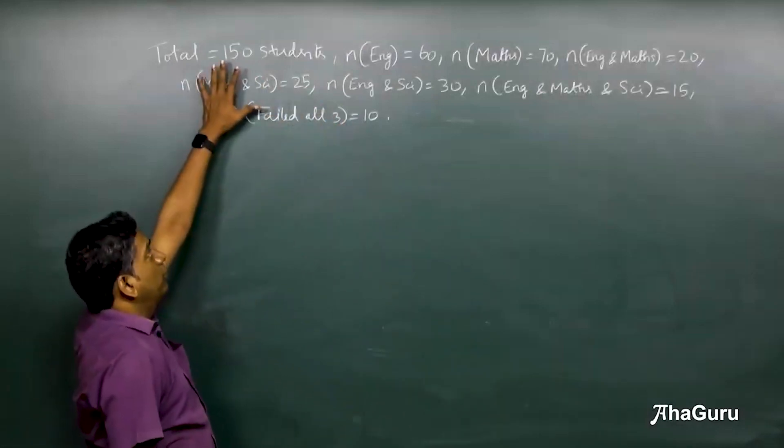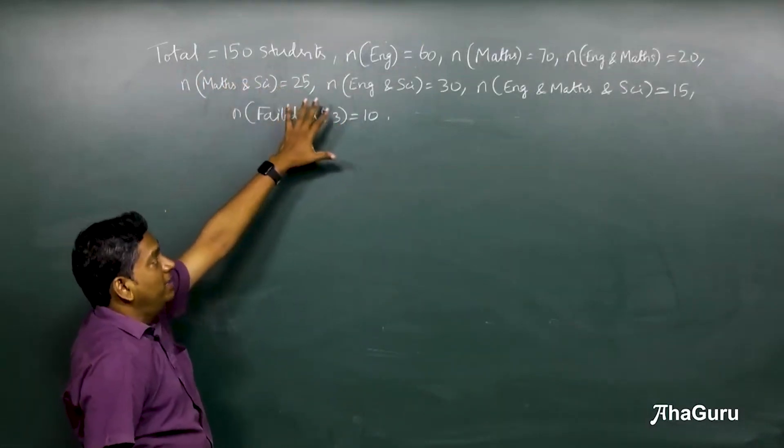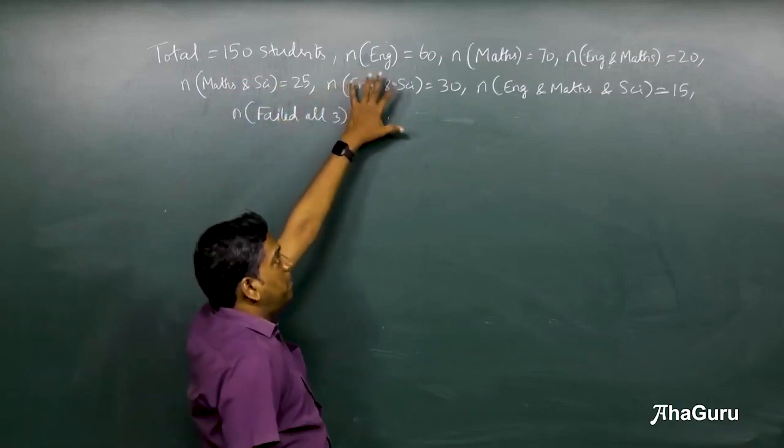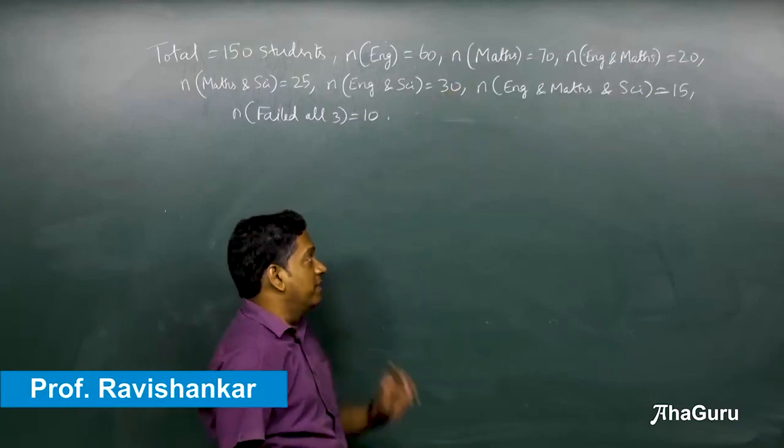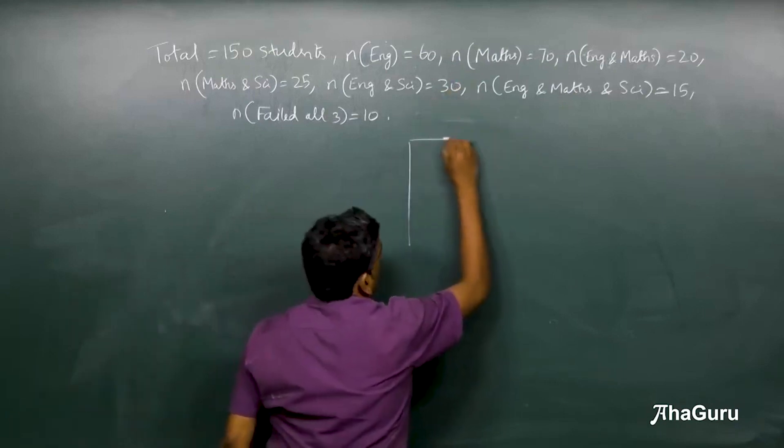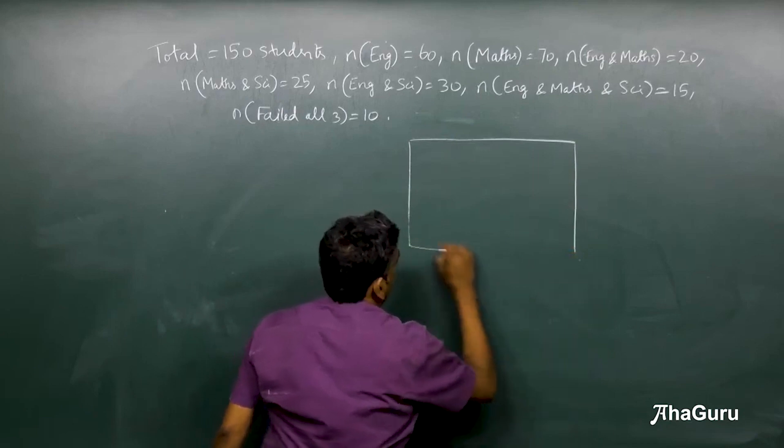We are given that there are a total of 150 students and the number of students passed in various categories: English, Math, English and Math, etc. is given. Let's try and fill this information in a Venn diagram.